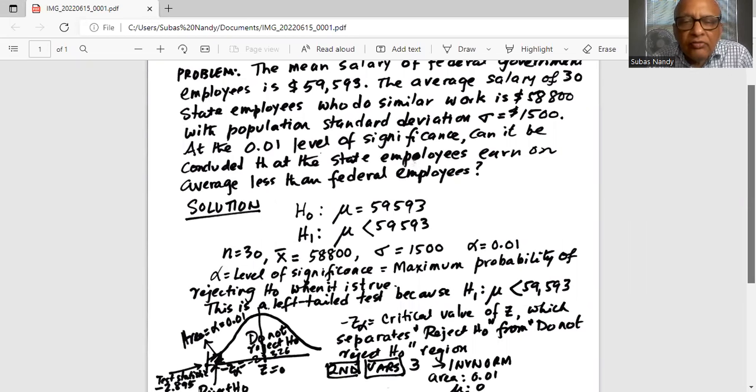So this is a left-tail test because the two slanted lines indicating less than sign meet at an H pointing to the left.